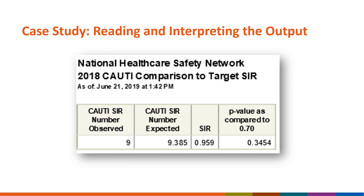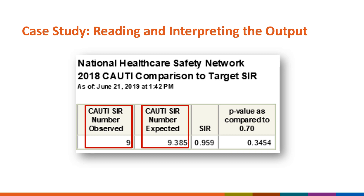We just walked through what the Statistics Calculator is doing in the background, but you'll just see your results pop up in a separate window. The results will display your number observed, number predicted (also known as number expected), and calculated SIR from the input screen. Additionally, your results will display the p-value for your SIR as compared to your nominal value or target SIR. Next, let's talk about interpreting the p-value.